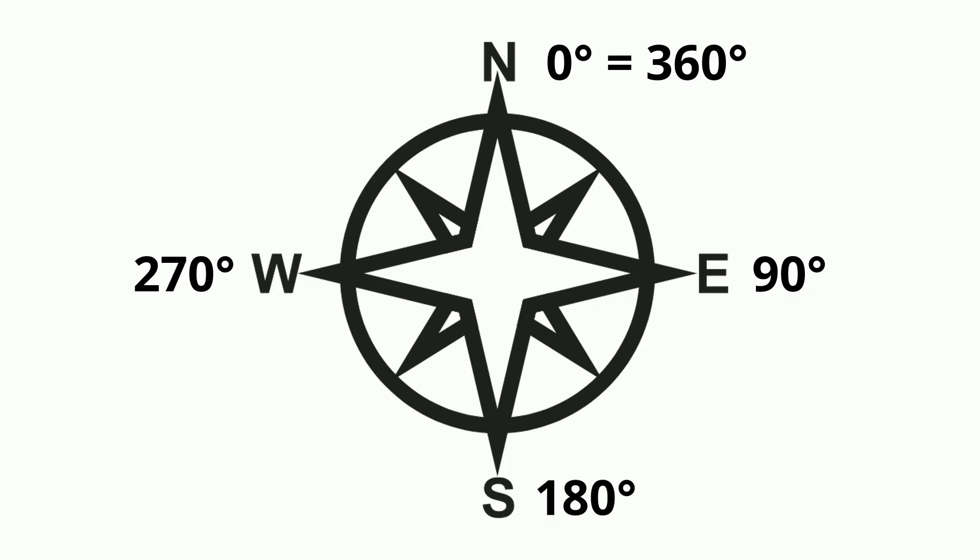The intermediate directions fall at these degrees on the compass. Northeast, 45 degrees. Southeast, 135 degrees. Southwest, 225 degrees. And northwest, 315.